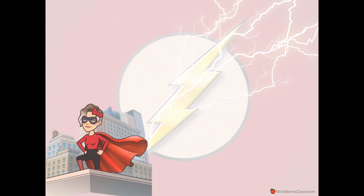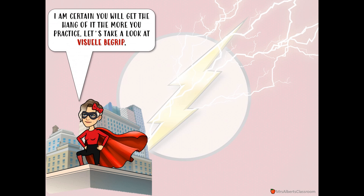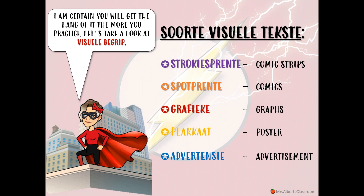When we look at your visual, it does get better with practice. So let's look at the different types of visual text that you can get. You can get your comic strips, your comics, graphs, and there could be posters or advertisements.